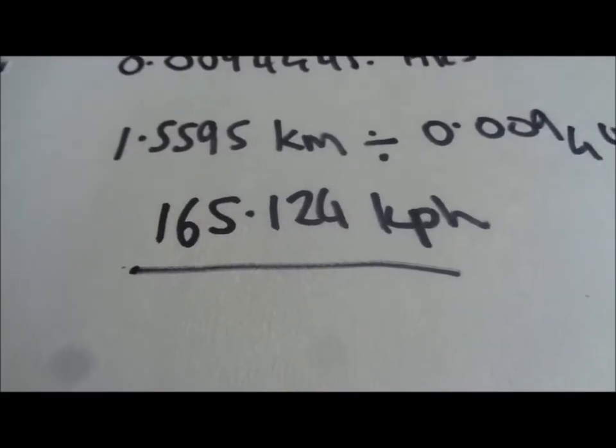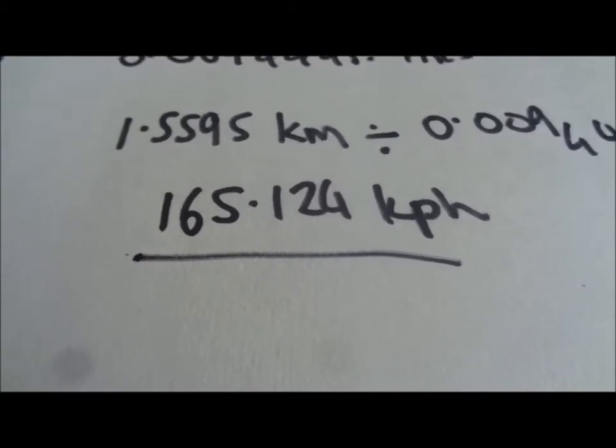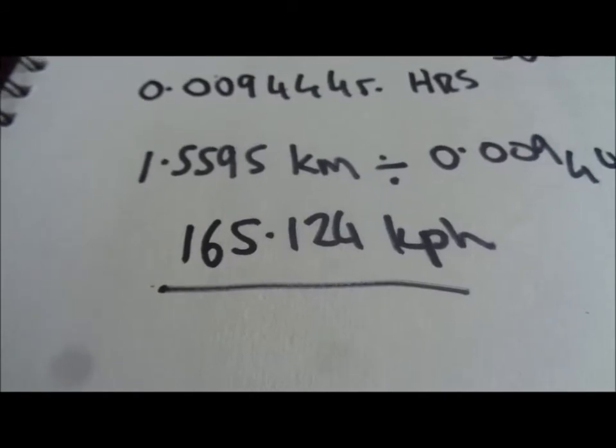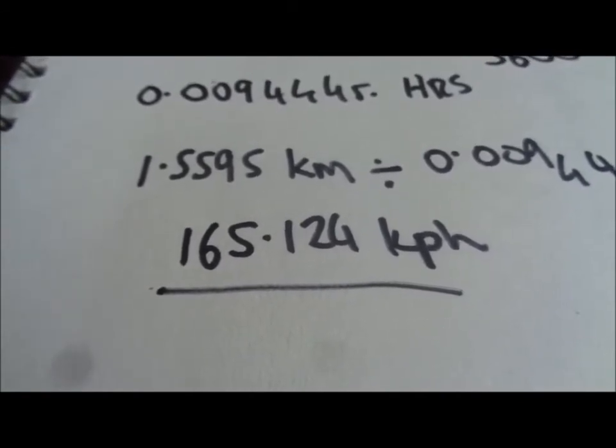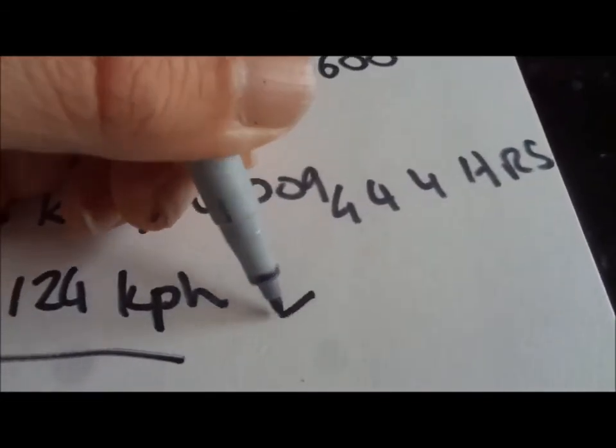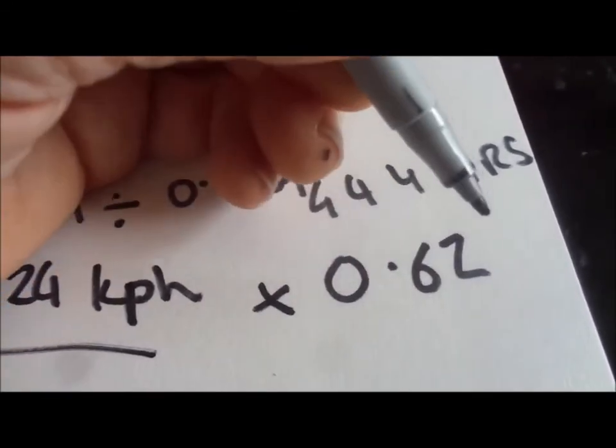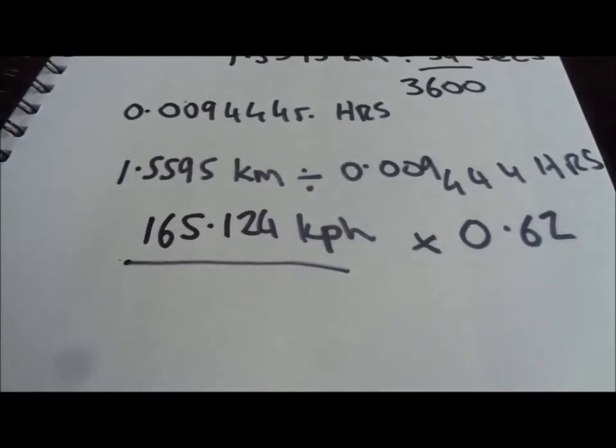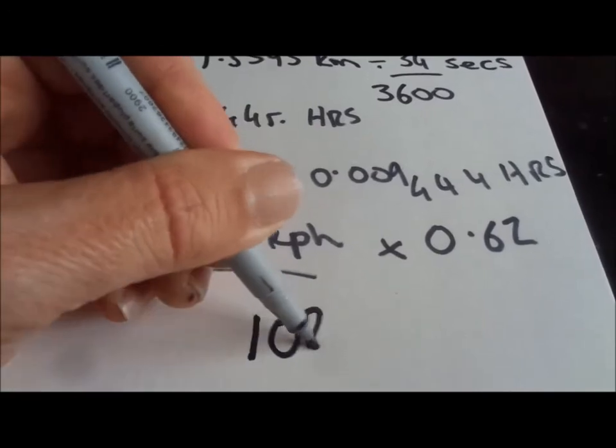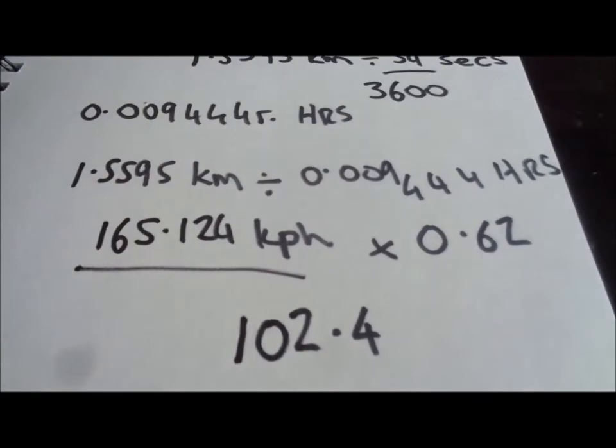Now then, that's kilometres per hour. What we're trying to find out is miles per hour. The reason we did all this starting off in kilometres and millimetres is because it's an awful lot easier than working in miles per hour. We can now work out miles per hour simply by working out that a kilometre is 0.62 of a mile. So if we multiply all that by 0.62, we'll come out with the answer of 102.4 miles per hour.